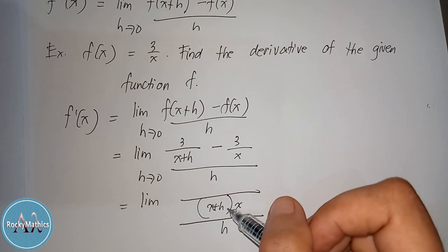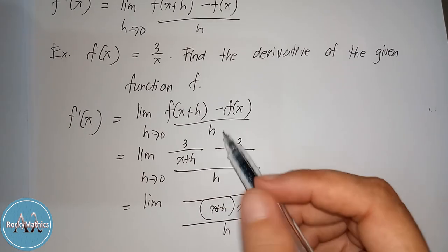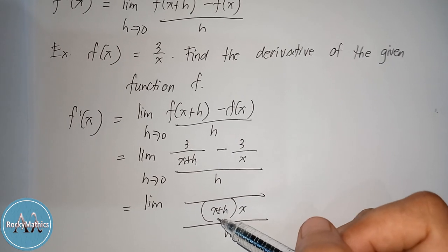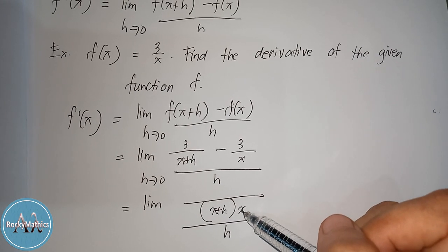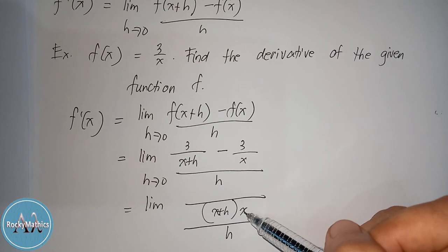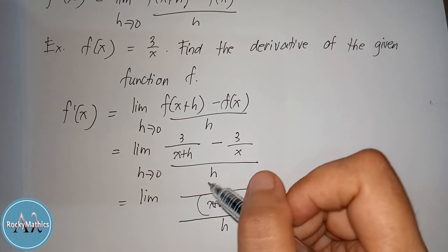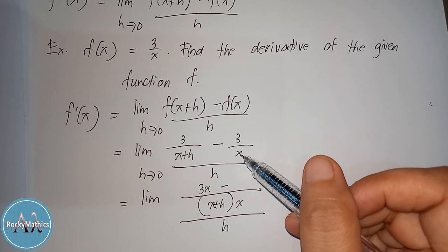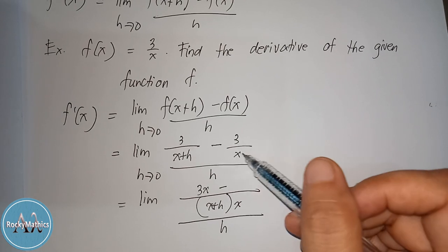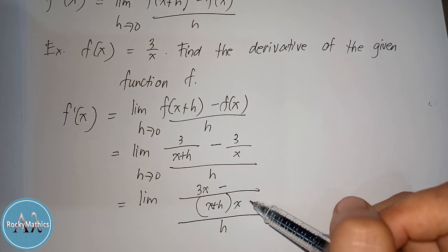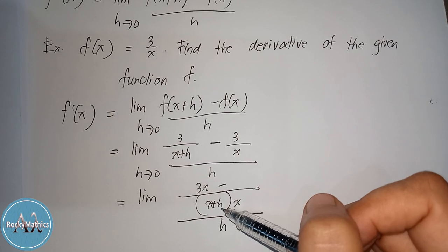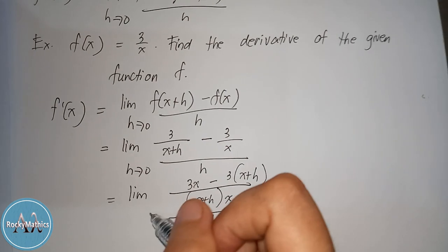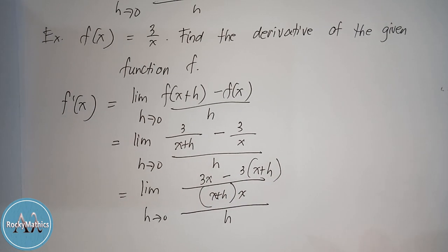So the LCD is x plus h times x. Performing the operation of finding the difference: x plus h times x divided by x plus h gives x, then multiplied by the numerator 3, giving 3x. And x times x plus h divided by x leaves x plus h, times 3, giving 3 times x plus h. Do not forget: as h approaches 0.